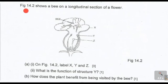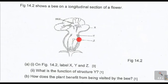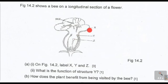So the question reads: figure 14.2 shows a bee on a longitudinal section of a flower. This figure is showing a bee on this section of a flower. The flower is labeled with the structures X, Y, and Z.